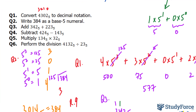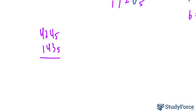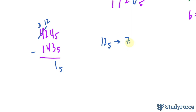Question 4: Subtract 424 sub 5 minus 143 sub 5. We do this as we normally would. 4 minus 3 is 1. Now 2 minus 4 doesn't work — 2 is smaller than 4 — so we borrow 1 from the digit on its left. That becomes 3, and this 2 becomes 12 sub 5, which is equivalent to 7. 7 minus 4 is 3, and 3 minus 1 is 2. So the answer is 231 sub 5.